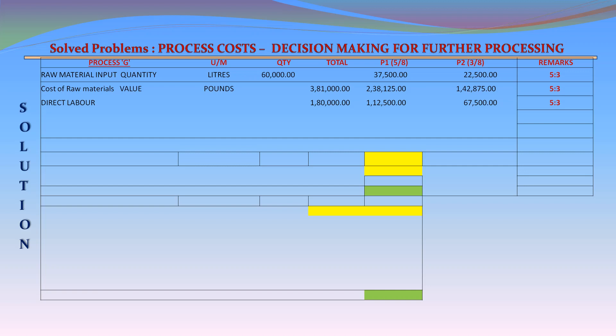Direct labor: £180,000 — P1 at 5/8: £112,500; P2 at 3/8: £67,500. Direct expenses: £54,000 — P1 at 5/8: £33,750; P2 at 3/8: £20,250. Production overheads at 110% of labor (110% of £180,000) — P1 at 5/8: £123,750; P2 at 3/8: £74,250.